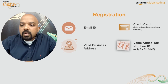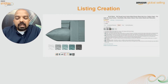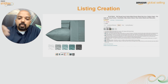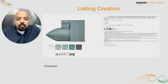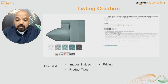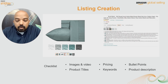Once you are registered, the next step is creating listings for your products. Listing creation is all about creating the detail page — the details you display to customers. Customers visit detail pages and, depending on the content, make their purchase decision. Some of the critical elements of a detail page are high-quality images and videos if possible, the pricing of the product, bullet points, product titles, keywords, and product description. It's very critical to have high-quality listings because this is what customers see and understand about your product.